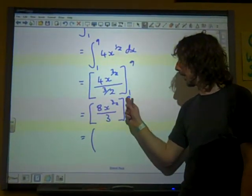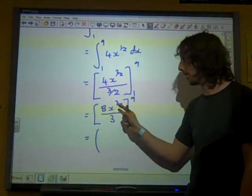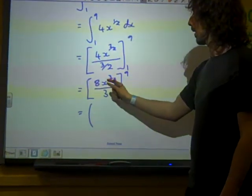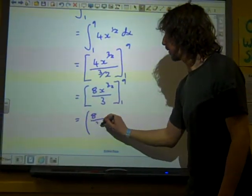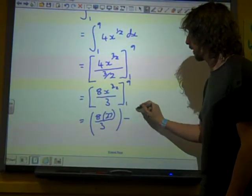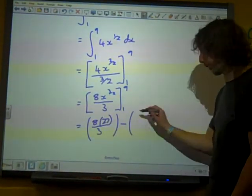So that is nine square rooted is three cubed, is 27. Now we're subtracting eight over three.